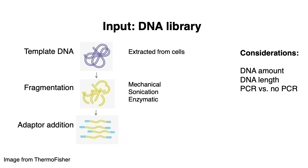Once you've fragmented your input DNA, you typically need to add adapters. What exactly these adapters contain depends on the technology — for Illumina sequencing, we'll discuss what goes into them. Generally, adapters include sequences that help with amplification, such as primer sites, or complementary sites that allow you to bind fragments to a fixed platform. Illumina uses a technology called a flow cell, and the adapters help bind and fix reads to this flow cell for sequencing.